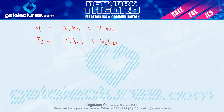अभी तक हम z parameter और y parameter study कर चुके हैं, now हम h parameter study कर रहे हैं. आप देख सकते हैं कि सारे parameters में 2-2 equations use होते हैं — वही आपका base है उन parameters के analysis के लिए. हमने z parameter में v1, v2 use किया था; y parameter में i1, i2 use किया था. तो आप सोच रहे होंगे कि इन्हें याद कैसे रखें.